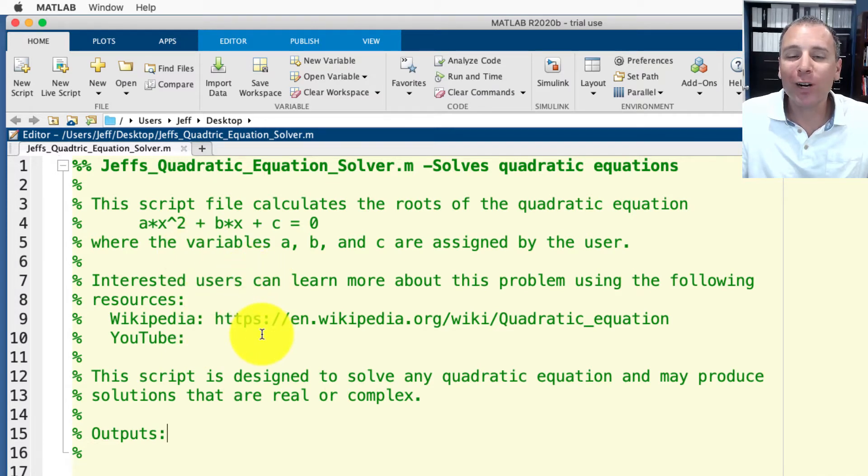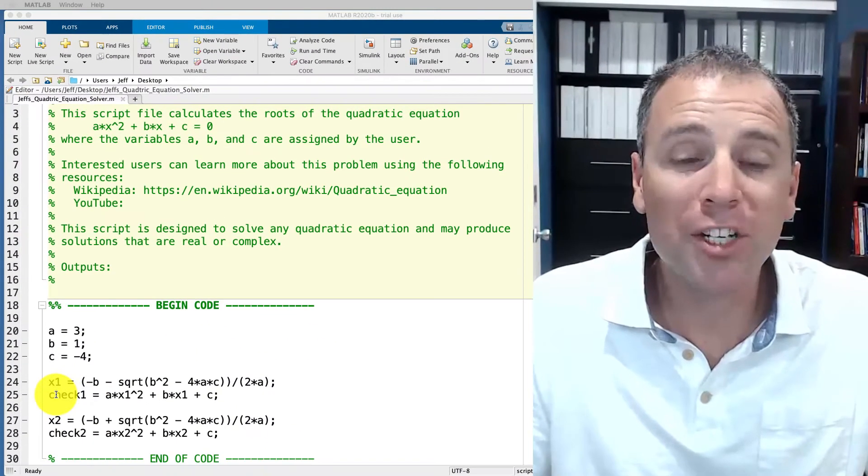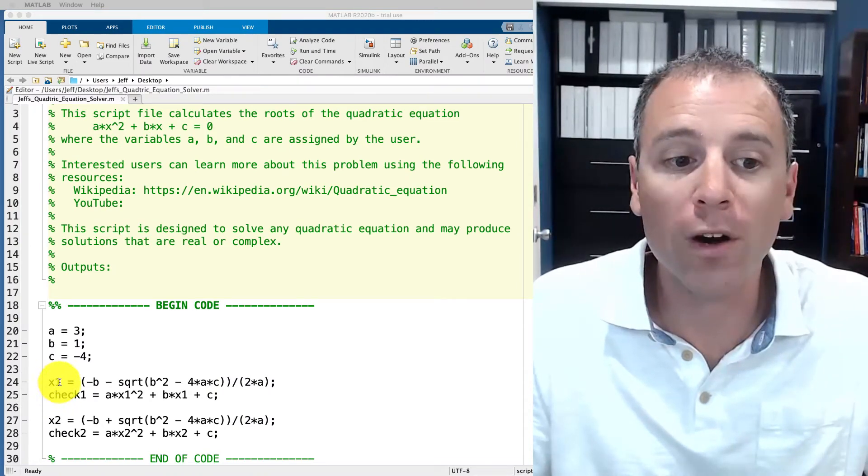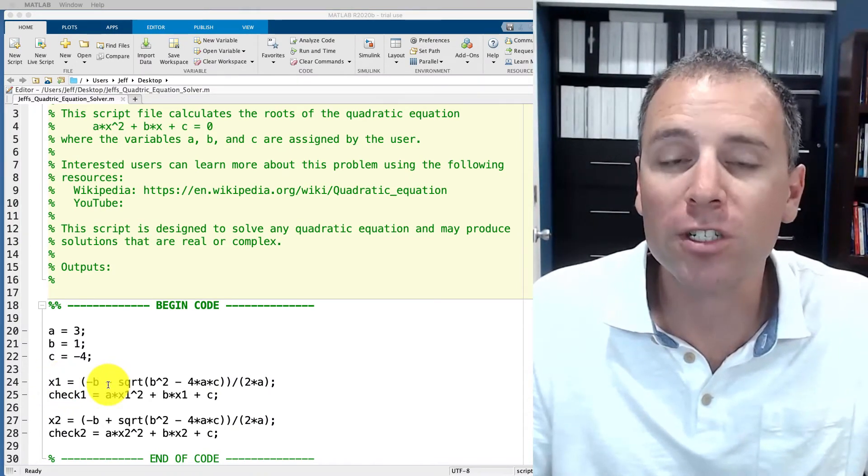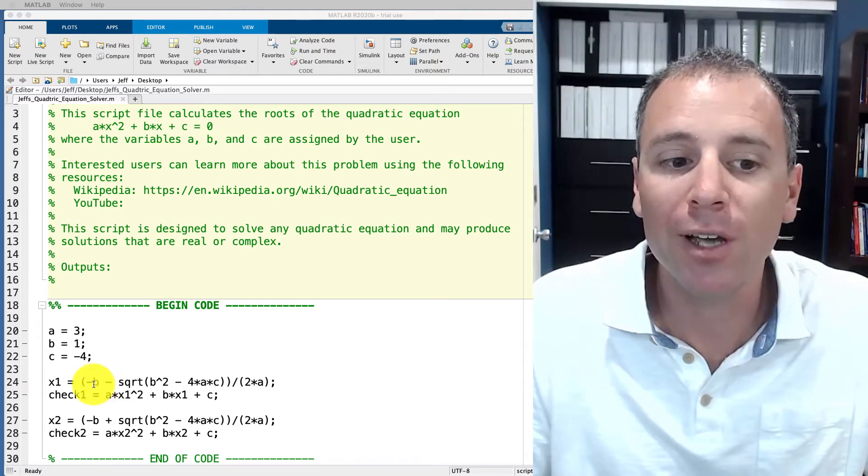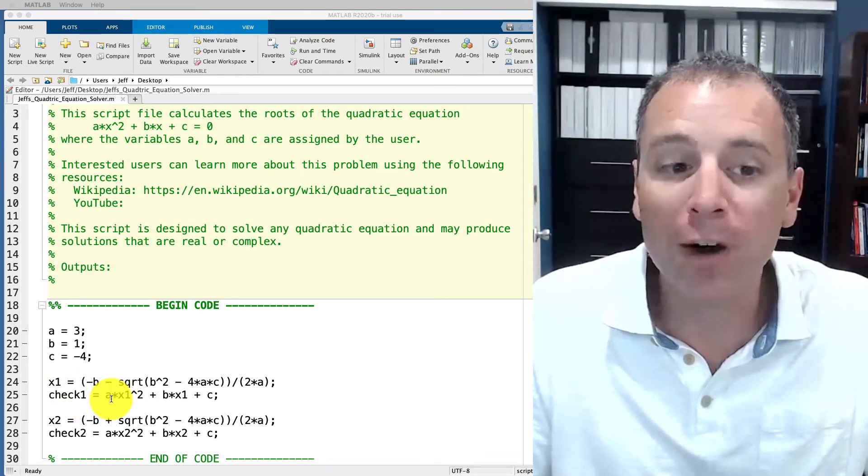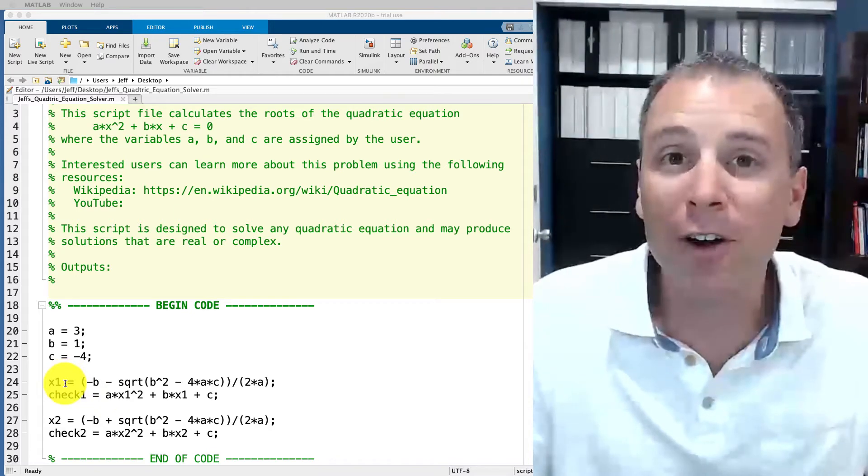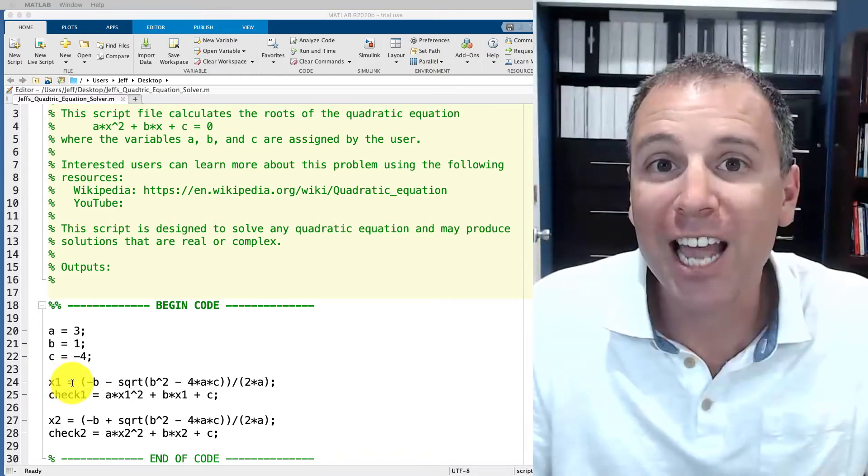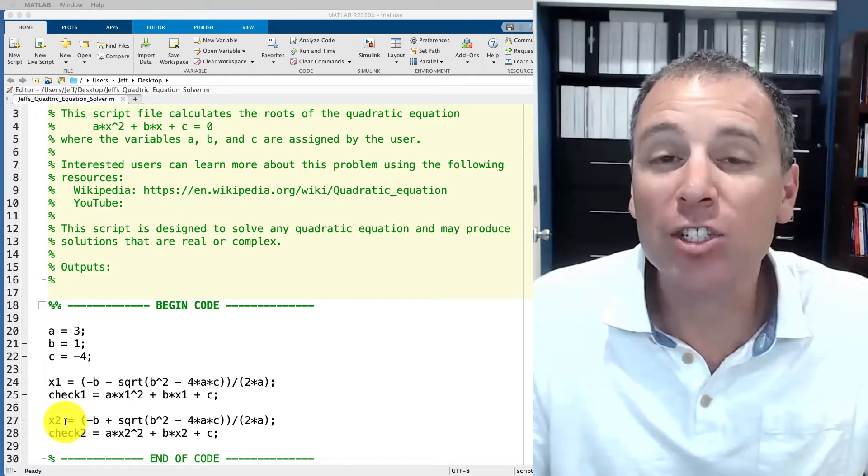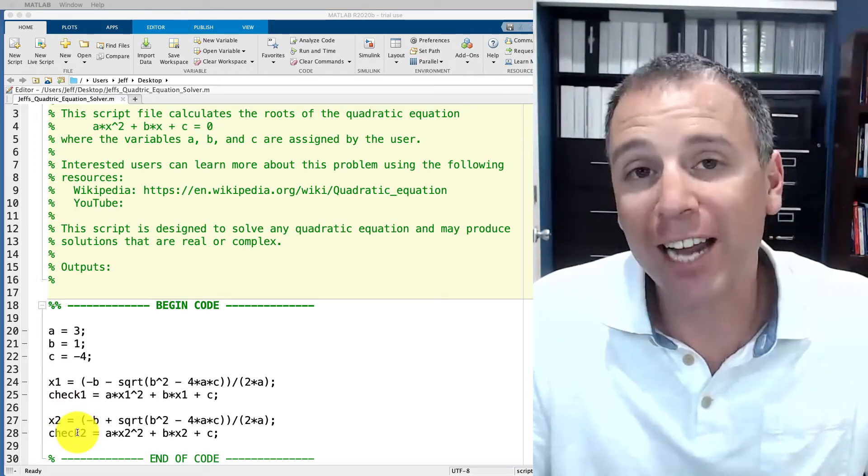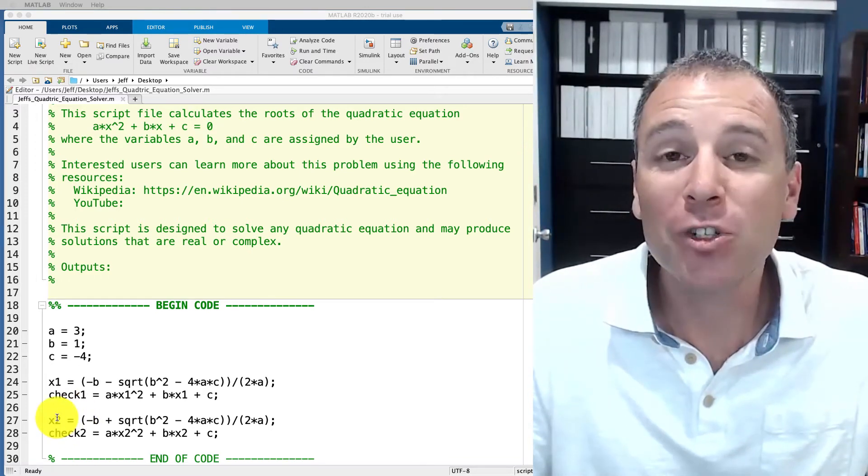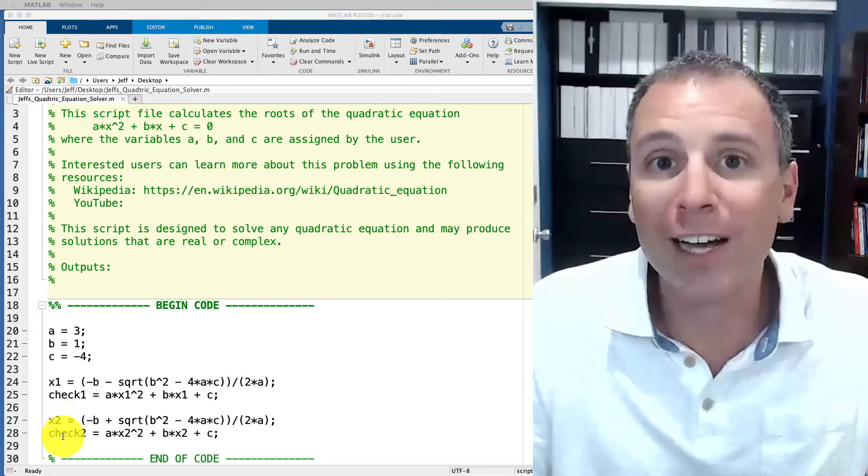After we've answered those three questions we're gonna highlight relevant outputs, the actual value that the code produces here in this section called outputs. In our situation we actually have four different outputs that we've used one of which is x1 which is the first solution to our quadratic equation. We also have a check one variable that verifies that our x1 variable actually solves the quadratic equation. We also have an x2 variable and a check two variable.